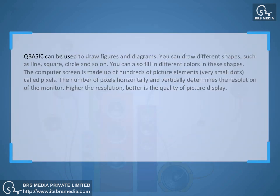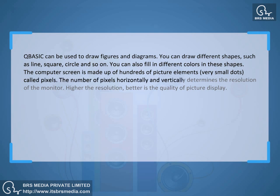QBasic can be used to draw figures and diagrams. You can draw different shapes such as line, square, circle, and so on. You can also fill in different colors in these shapes. The computer screen is made up of hundreds of picture elements — very small dots called pixels. The number of pixels horizontally and vertically determines the resolution of the monitor. Higher the resolution, better is the quality of picture display.